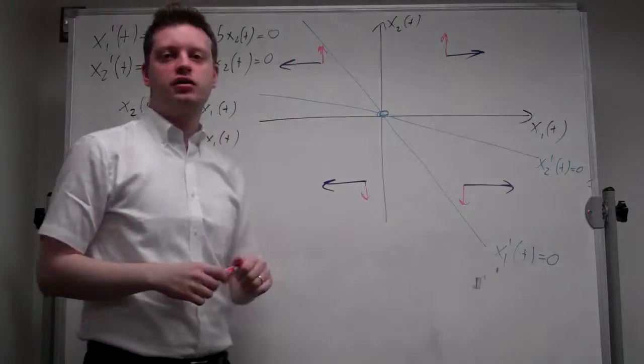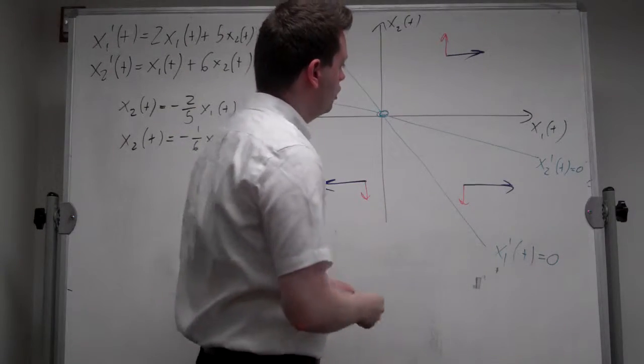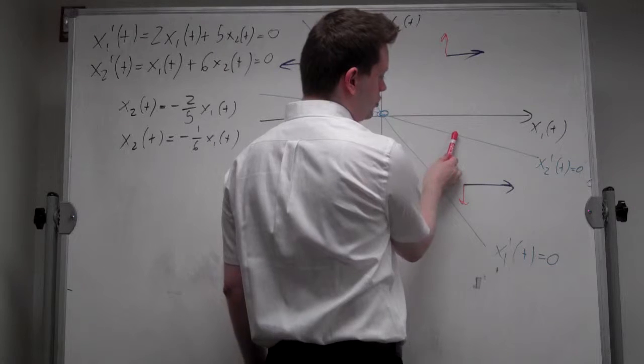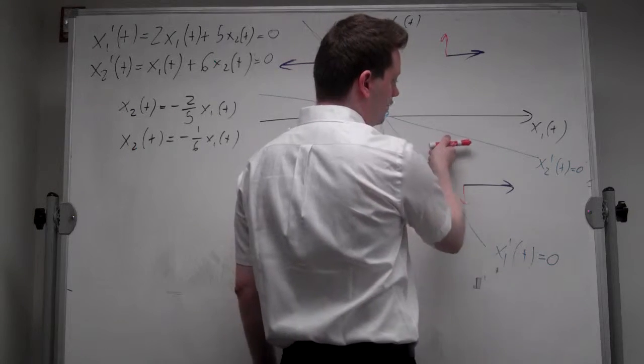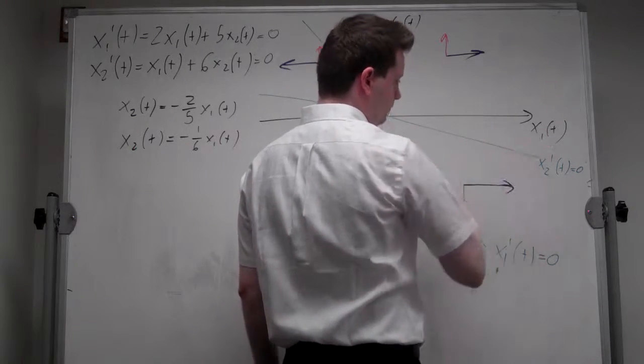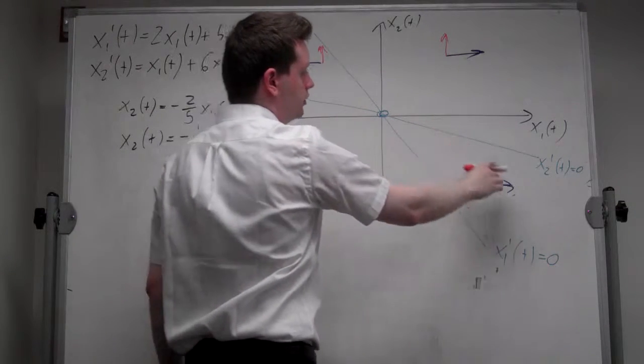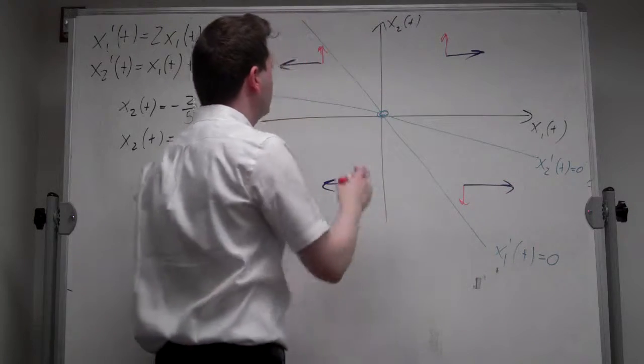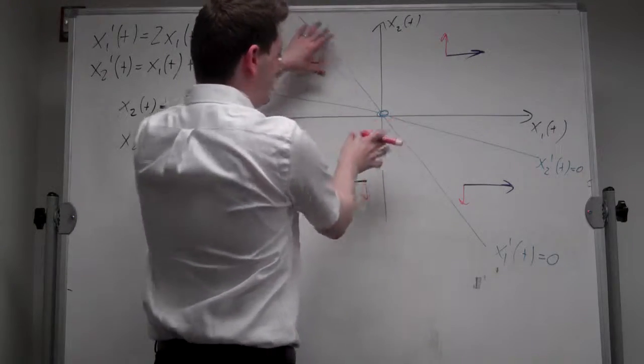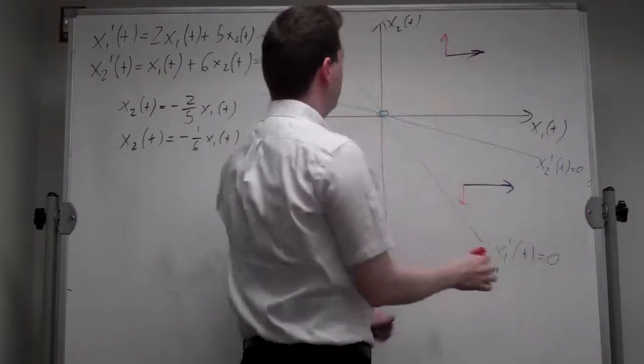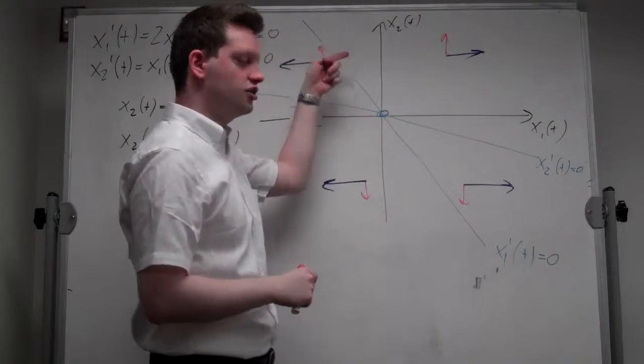And now we have distinguished the dynamics. You can also add arrows on these lines. In particular, if you're on the x2 line, you're still to the right of the x1 prime t equals zero line, so you're moving to the right. And similarly, if you're up here, you're still above the x2 prime t equals zero line, so move up.